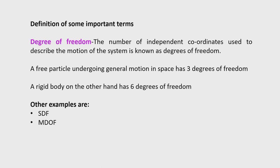Let us see some definitions. In vibration problems, we encounter the term degree of freedom: it is the number of independent coordinates used to describe the motion of the system. A free particle undergoing general motion in space has 3 degrees of freedom — 3 translations in x, y, z directions. A rigid body has 6 degrees of freedom: 3 translations along the 3 coordinate axes and 3 rotations about these axes.